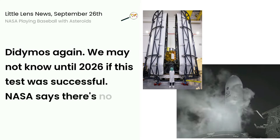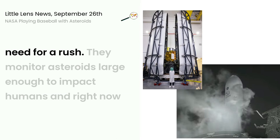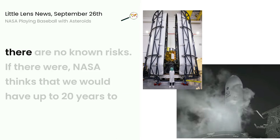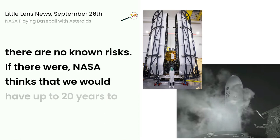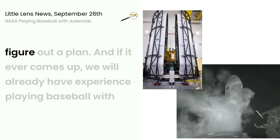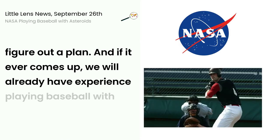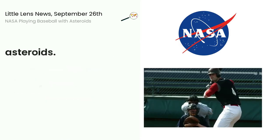NASA says there's no need for a rush. They monitor asteroids large enough to impact humans, and right now there are no known risks. If there were, NASA thinks that we would have up to 20 years to figure out a plan. And if it ever comes up, we will already have experience playing baseball with asteroids.